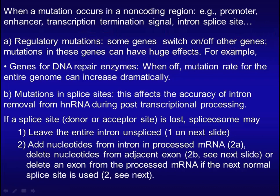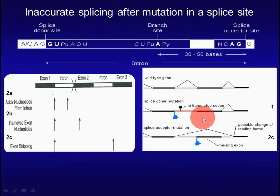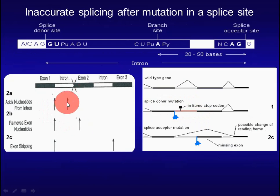The second group is mutations in splice sites. This affects the accuracy of intron removal from heterogeneous nuclear RNA during post-transcriptional processing. If a splice site is lost, two situations may occur. First, the intron is left unspliced — when the splice donor is mutated, the intron is left unspliced. Second, the cell will use a nearby site for splicing, which will cause the cell to either delete nucleotides from an exon or add nucleotides from an intron. If the cell uses the next normal splice site, it will result in deletion of the entire exon.